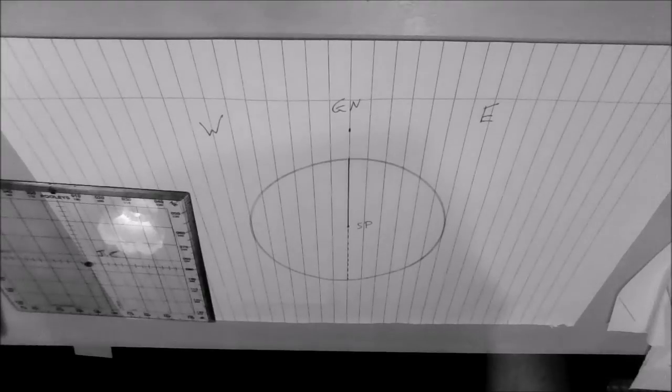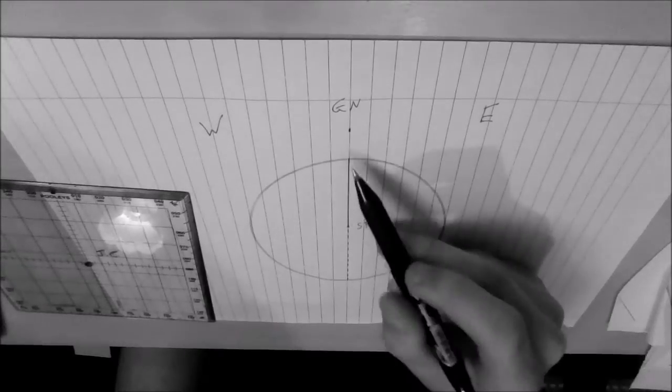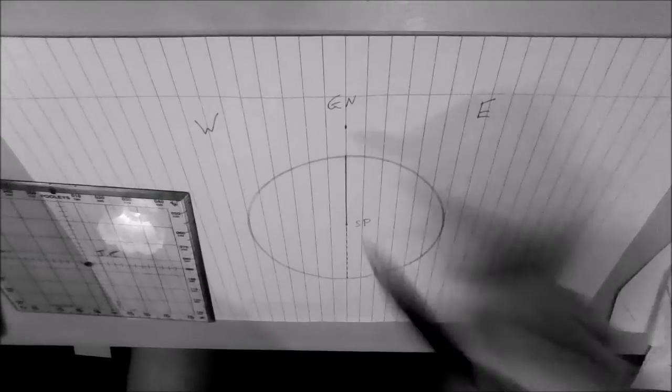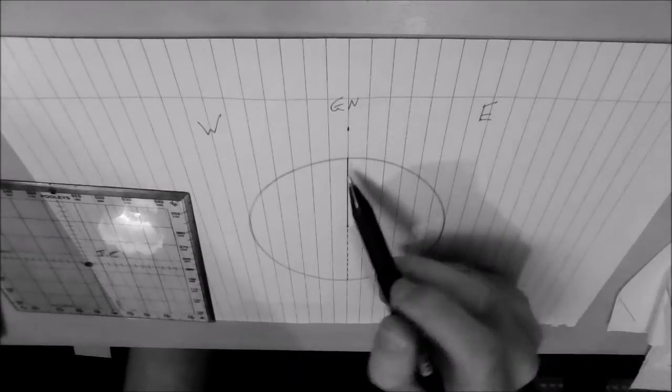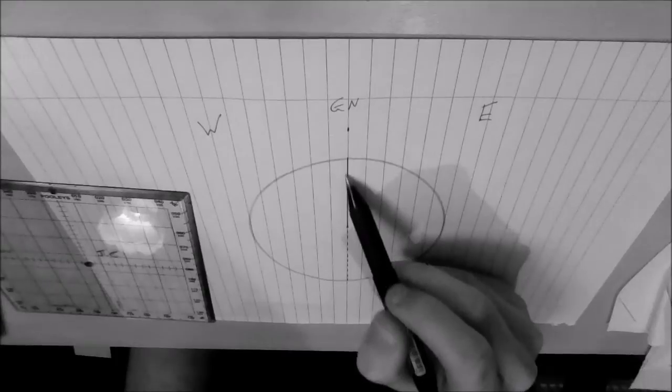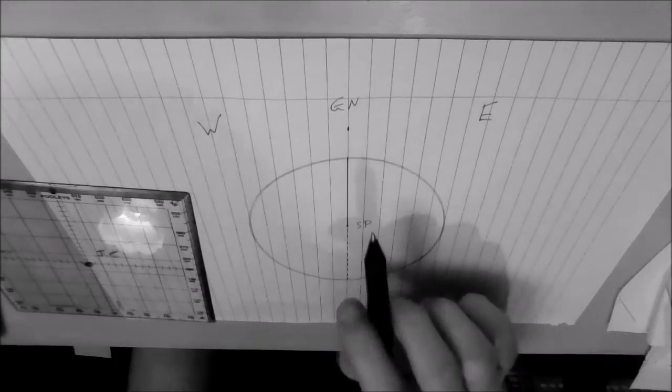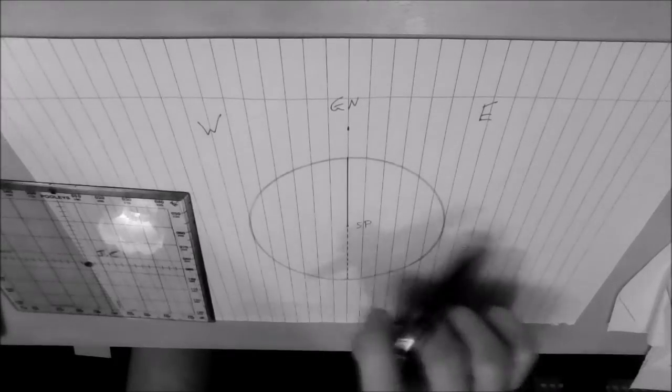OK, so the next thing I'm going to do is mark on our 100 west and 140 east. These are always measured from the meridian, not the anti-meridian, the meridian. OK, so 100 west is 100 degrees from this line here, and 140 east is 140 degrees east from that line there.